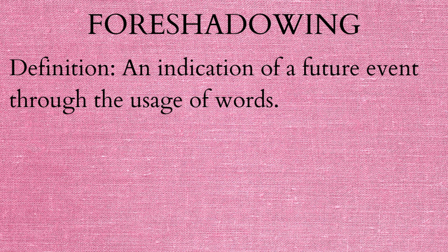Foreshadowing is an indication of a future event through the usage of words — when I can predict or foresee the future because of a certain act or usage of words in a poem or literary writing. For instance, if I'm reading Macbeth and I can see that the forest of Dunsinane is moving, then I can predict there will be a war. Or if I'm watching a film and the villain has escaped jail, I can assume there will be a fight between the hero and villain — that is foreshadowing.